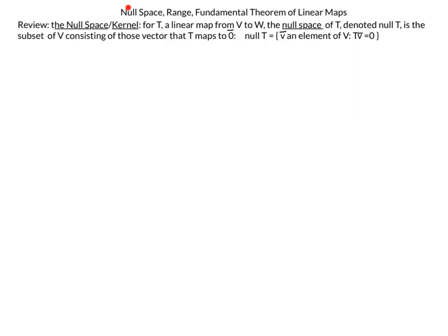Our last video focused on the null space, so we'll do a quick review. The null space, also called the kernel, of a linear map T from V to W is denoted null(T), and is the subset of V consisting of those vectors that T maps to zero. It is very important to remember that the null space is a subspace of V.